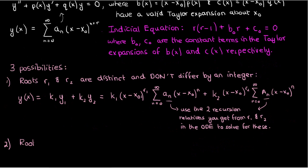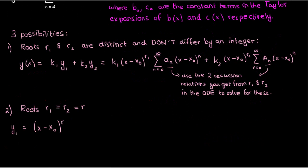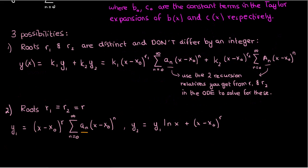The second possibility is that you have two repeated roots. The coefficients aₙ in y₁ are found from the recursion relation you originally get when solving the ODE. However, the coefficients Aₙ in y₂ are found by plugging y₂ back into the ODE and then solving for those Aₙ individually.